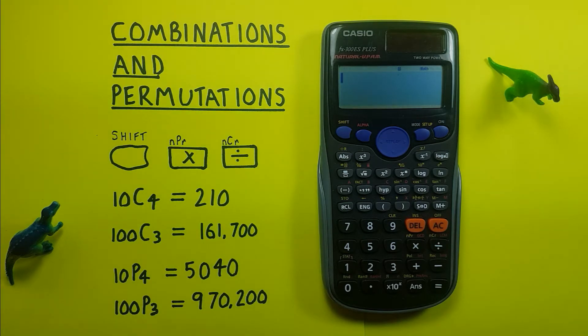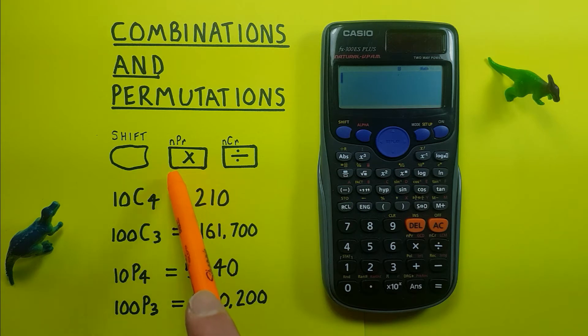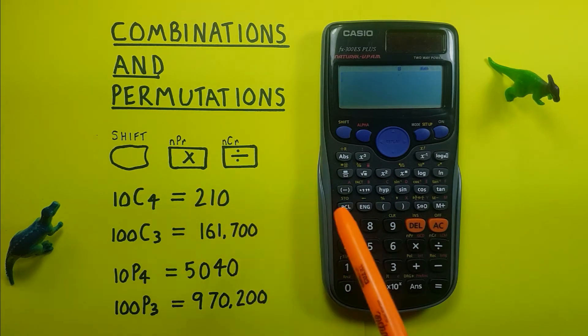To do this, we'll be using the shift key located here, as well as the multiplication key with a shift function of permutation located here, and the division key with the shift function of combination located here.